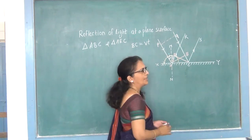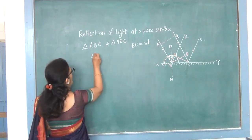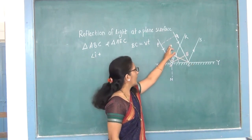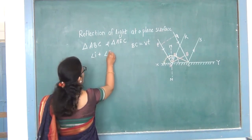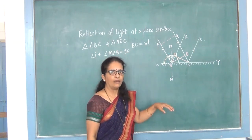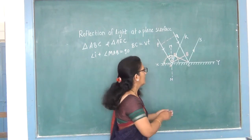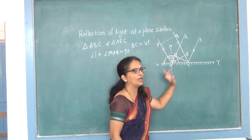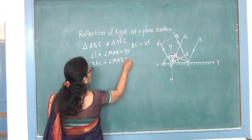The angle between ray PA and wavefront AB is 90 degrees, since ray and wavefront are perpendicular to each other. So angle MAB is equal to 90. Similarly, the normal to the surface means angle MAB plus angle BAC is also equal to 90. From these two equations, since both right-hand sides equal 90 and angle MAB is common, we get angle BAC is equal to angle I.